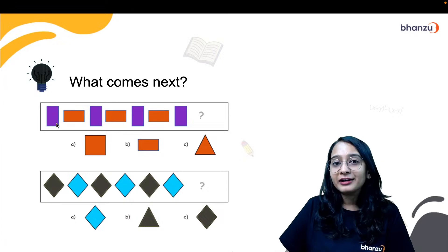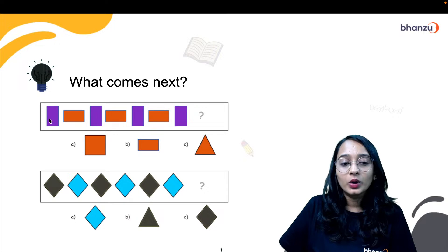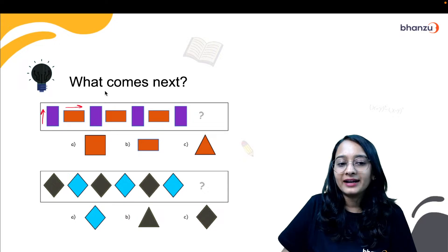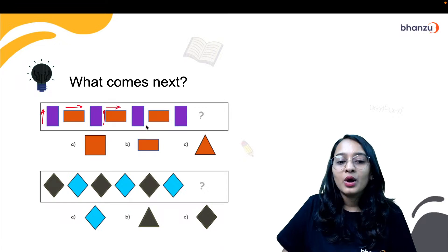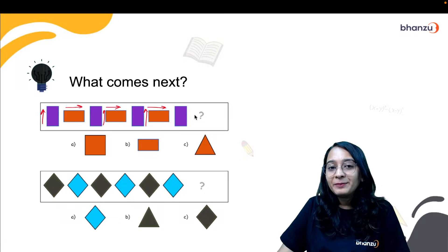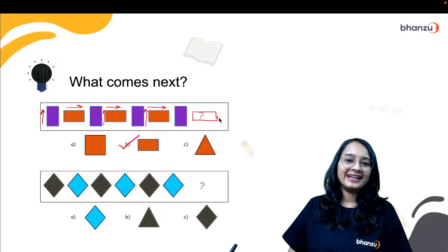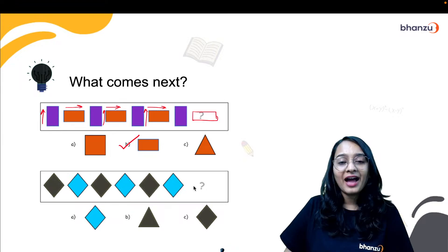So all of these concepts is something that you've already learned in your Grade 5, right? So replace the question mark here. So what is the pattern that you're seeing? There's a purple rectangle which is vertically standing and there is a horizontal brown rectangle. Vertical purple rectangle, horizontal brown rectangle, and so on. So what would replace the question mark here? There would be a horizontal brown rectangle. And what about this? Yellow, blue, yellow, blue, yellow, blue. So what do we have here? We'll have a yellow rhombus. This is in the shape of a rhombus.